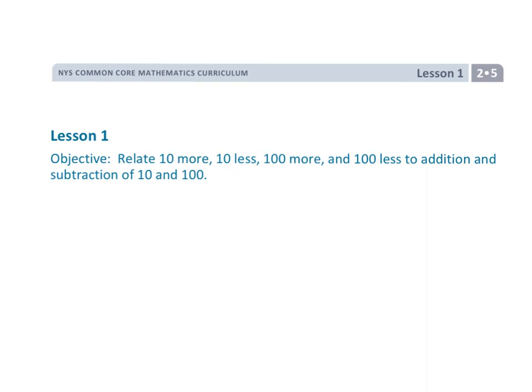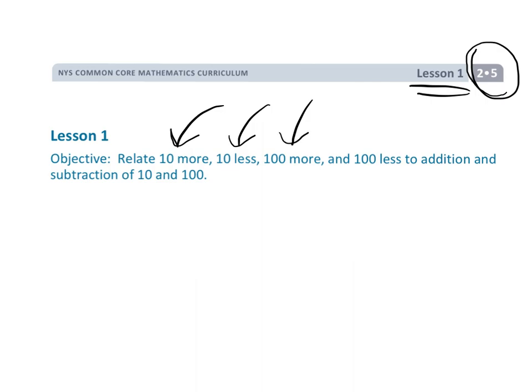And that wraps up grade 2, module 5, lesson 1, where students are learning 10 more, 10 less, 100 more, 100 less, and they're relating that to these mental techniques for adding and subtracting.